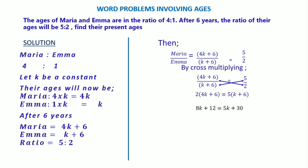We need to collect the like terms. By collecting the like terms, we shall have 8k minus 5k equals 30 minus 12.